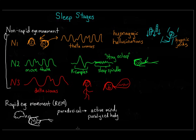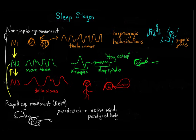In a normal night of uninterrupted sleep, you cycle through these stages about four or five times, with each complete cycle taking about 90 minutes. The order within a cycle tends to go from N1 to N2 to N3, then back to N2 before entering REM sleep, then back to N1, and then it starts all over again.